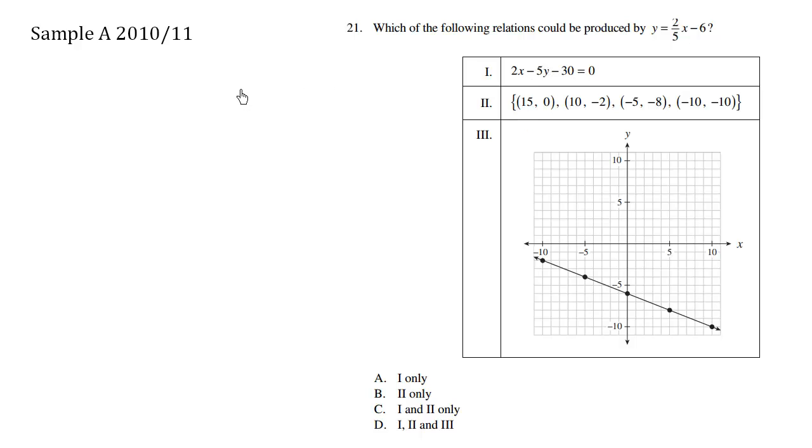Let's rewrite choice number one here. We have the equal sign here. I'm going to move the five over, the five y over to the right, adding five y's to both sides. So we have five y equals two x, and then minus thirty stays on this side here.